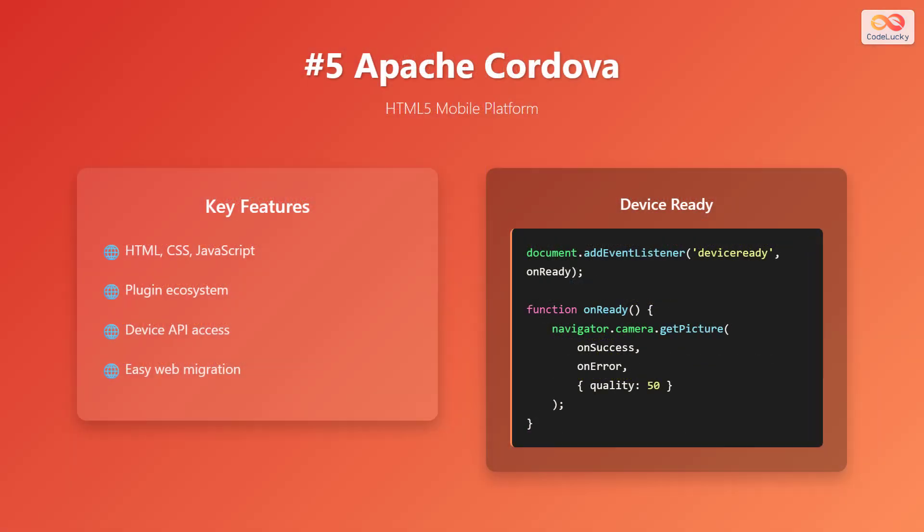Last but not least, we have Apache Cordova, an HTML5 mobile platform that enables developers to build mobile apps using web technologies like HTML, CSS, and JavaScript. Key features include HTML, CSS, and JavaScript, a plugin ecosystem, device API access, and easy web migration. The device ready code snippet demonstrates how to use the Cordova API to access the device's camera once the device is ready — it adds an event listener for the 'deviceready' event and then calls the getPicture method on the navigator.camera object.